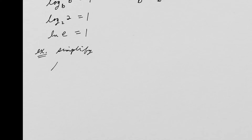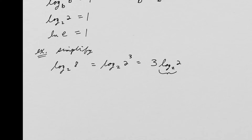Let's simplify log base 2 of 8. I can write 8 as 2 cubed, so this becomes log base 2 of 2 to the 3rd. Using the exponent property, I bring the 3 out front: 3 times log base 2 of 2. Since log base 2 of 2 equals 1, this is just 3. That makes sense because 2 cubed gives 8.